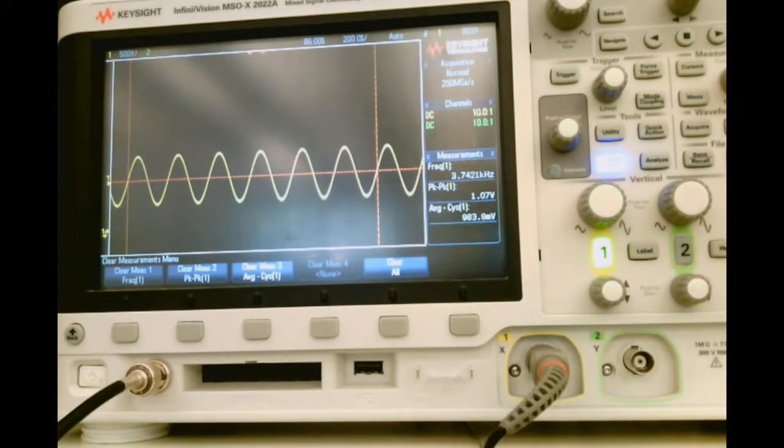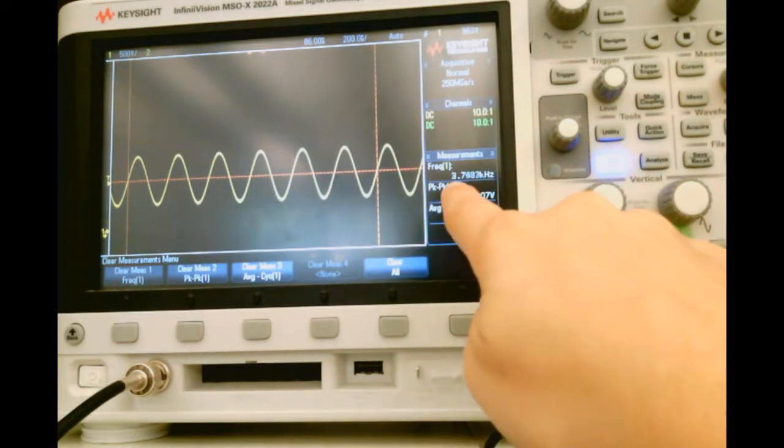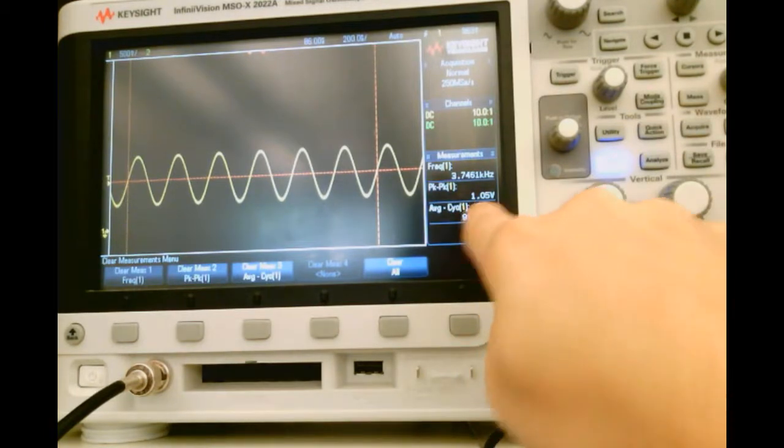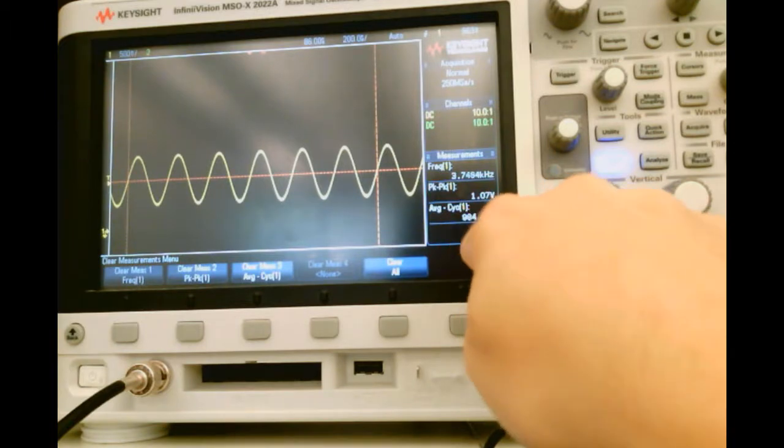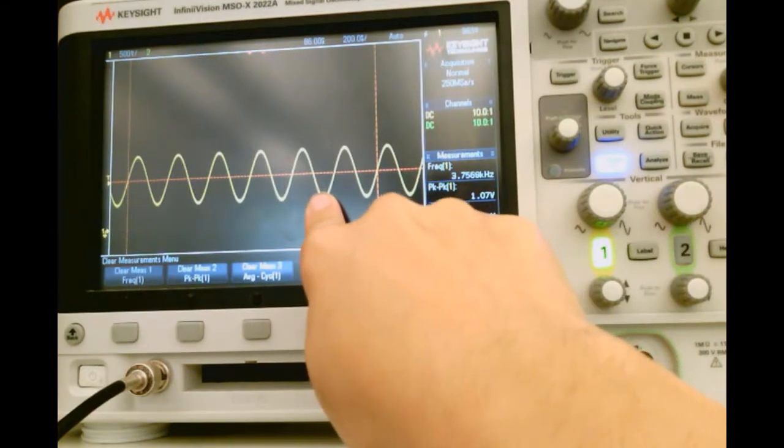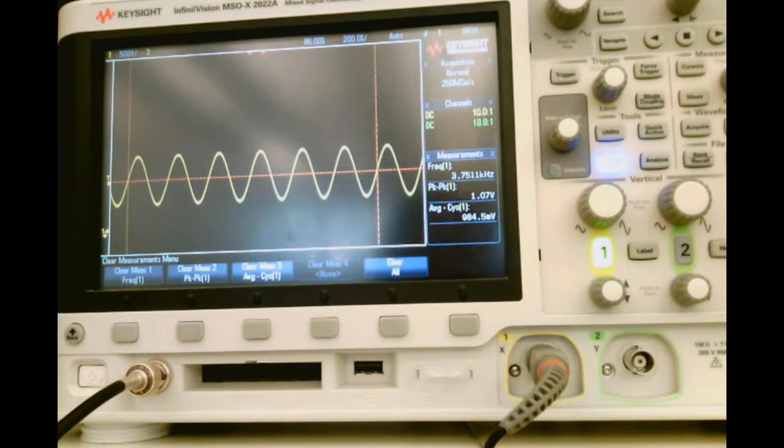As you can see on the oscilloscope, I do have a sine wave that has a frequency of 3.75 kHz, a peak-to-peak value of 1 volt, and an average value, or the same as the DC offset, of about 1 volt as well, or 983 millivolts. So I have now accurately shown the waveform that I have produced from my function generator on the scope.